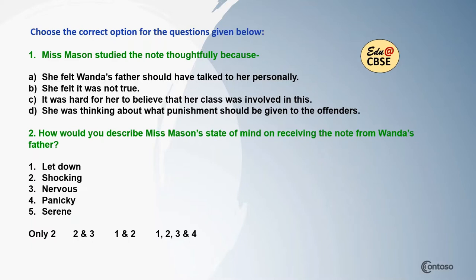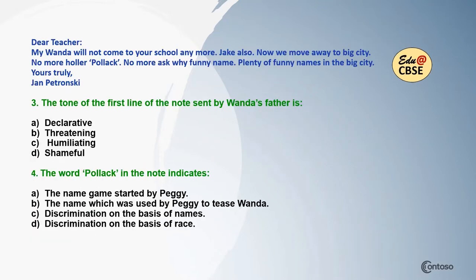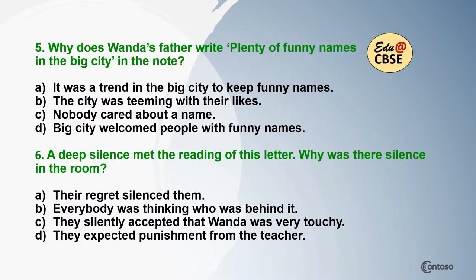Question 1: Miss Mason studied the note thoughtfully because... Question 2: How would you describe Miss Mason's state of mind on receiving the note from Wanda's father? You can pause, read the options carefully, and then decide. Now, this is the note — 'Dear teacher, my Wanda will not come to your school anymore. Jake also. Now we move away to big city. No more Holler Pollock. No more ask why funny name. Plenty of funny names in the big city. Yours truly, Jan Petronsky.' Question 3: The tone of the first line of the note sent by Wanda's father is... Question 4: The word 'Pollock' in the note indicates... Question 5: Why does Wanda's father write 'plenty of funny names in the big city' in the note?